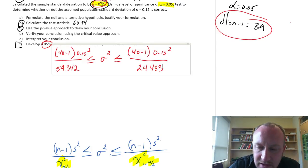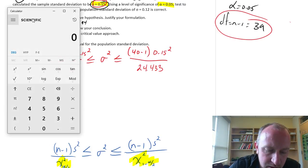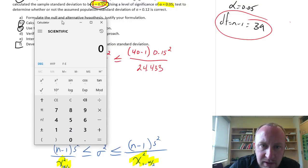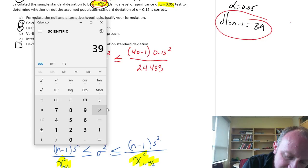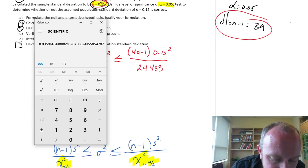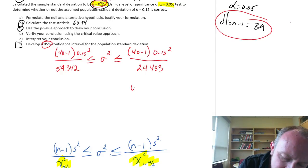Now all we need is our calculator. Let's move this. Can't really get it out of the way. We'll do one at a time. This is 39 times 0.15 squared divided by 24.433, which equals 0.0359.